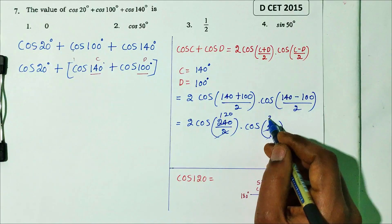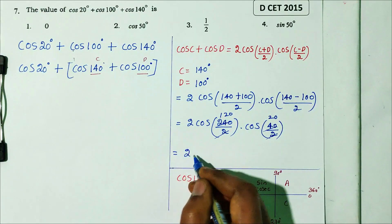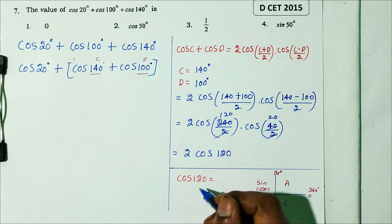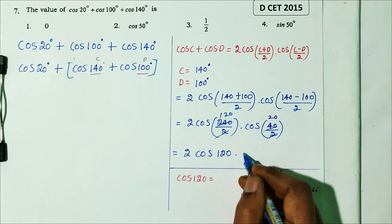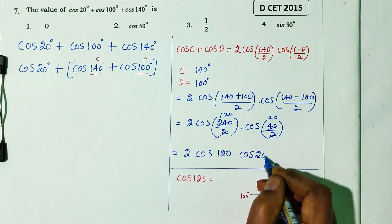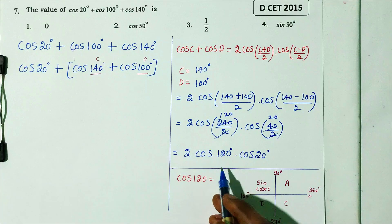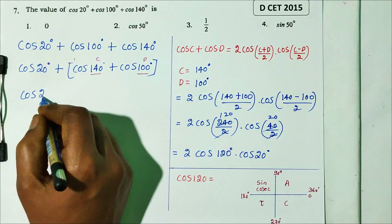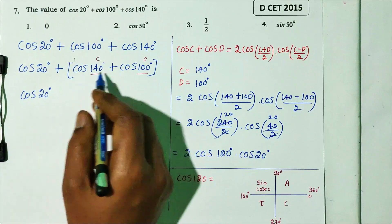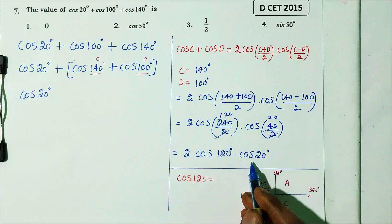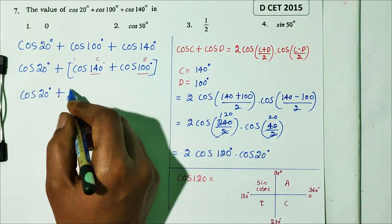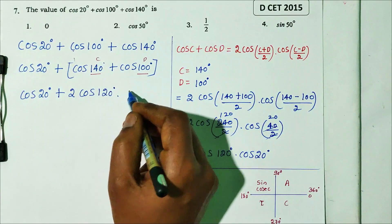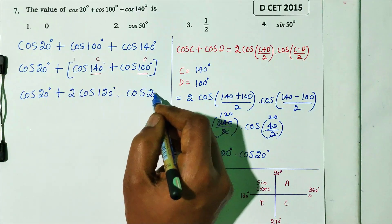So the expression becomes 2 cos 120 times cos 20, plus the original cos 20 degree. We now substitute the value of cos 120.